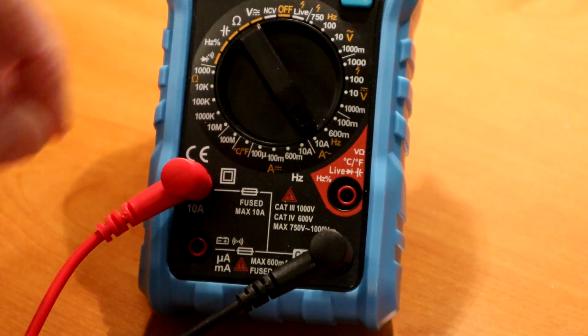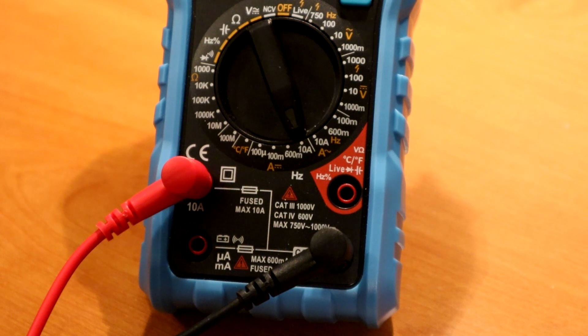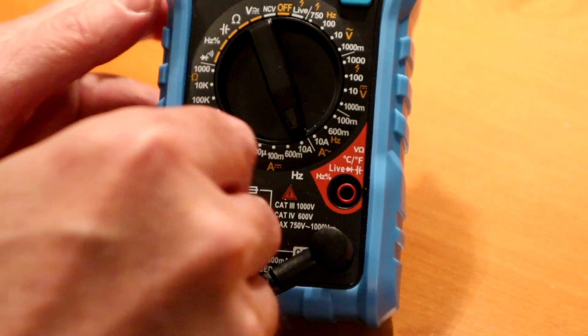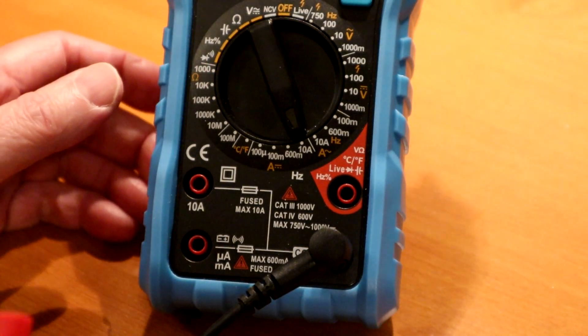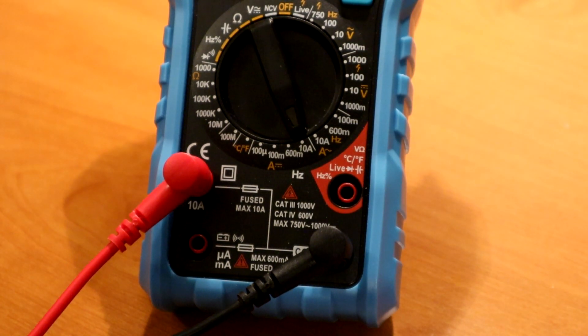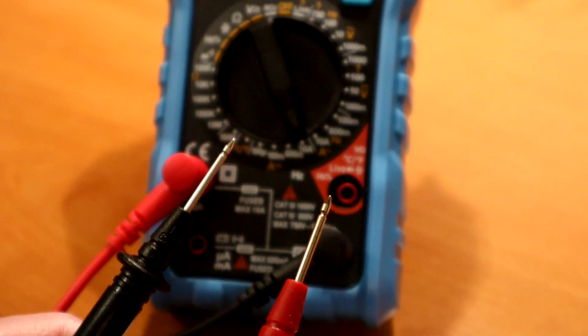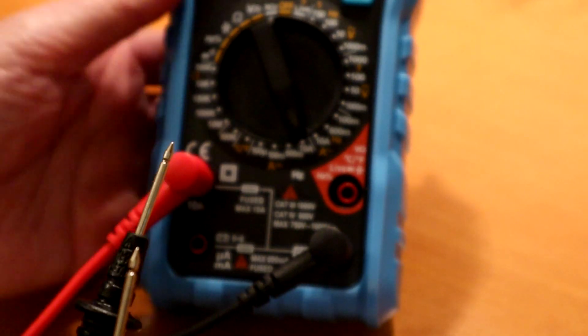If I move this on down to the current setting, the 10 amp current setting, it is still beeping. That's not good. So what I'm going to do is unplug this, and then I'll plug this back in. And now it's quiet. And so at this point, I could route current through here from the plus to the minus, and I could read the current.